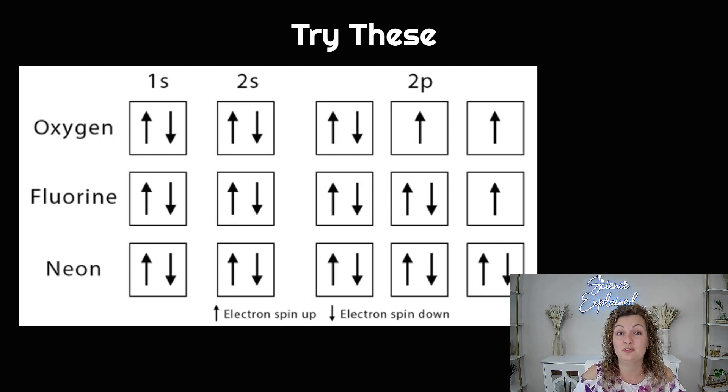And then neon should have all of them filled because neon is number 10. So it has 10 electrons. In other words, 10 arrows are being drawn. So up, down, up, down. And then we would go up, up, up, down, down, down to fill in our 2p6.